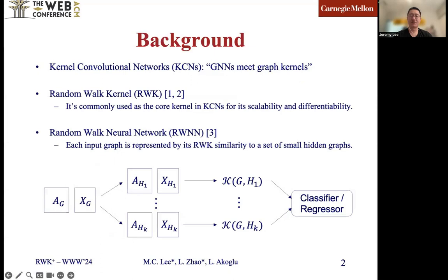Recently, many studies strive to bridge the worlds of graph neural networks and graph kernels. We named them as kernel convolutional networks. Among those studies, the random walk kernel is commonly used as the core kernel in KCNs. In random walk neural networks, each input graph is represented by its RWK similarity to a set of small hidden graphs. However, both RWK and RWNN have several flaws and have not yet been studied comprehensively.